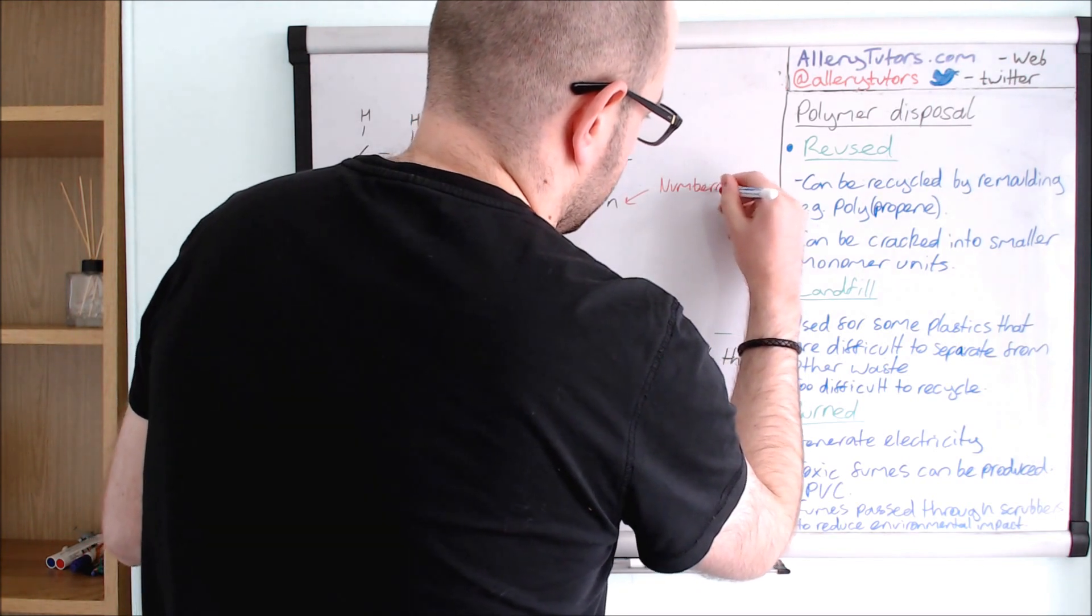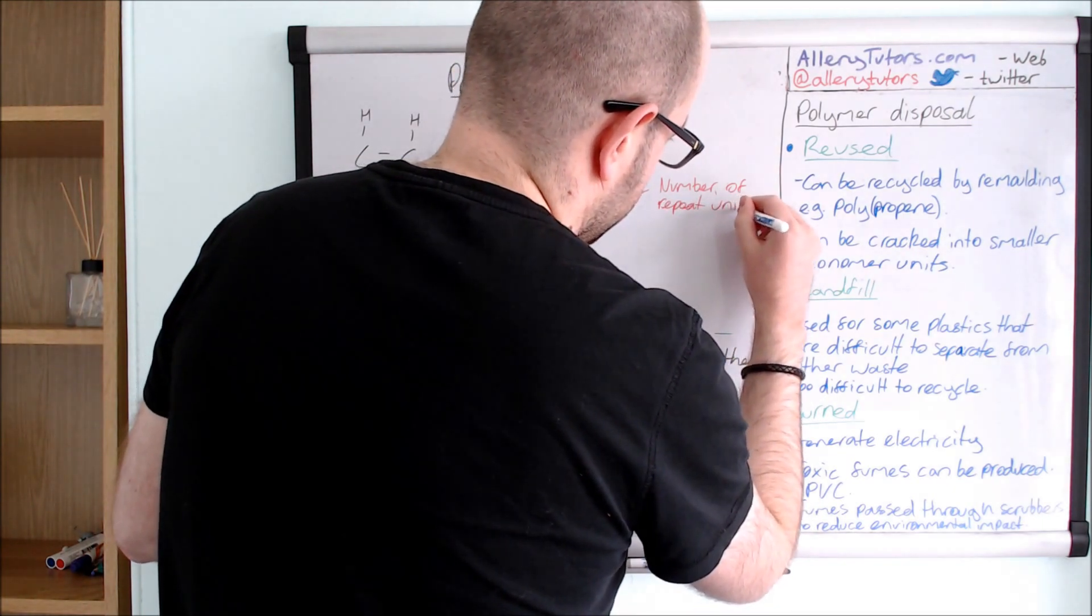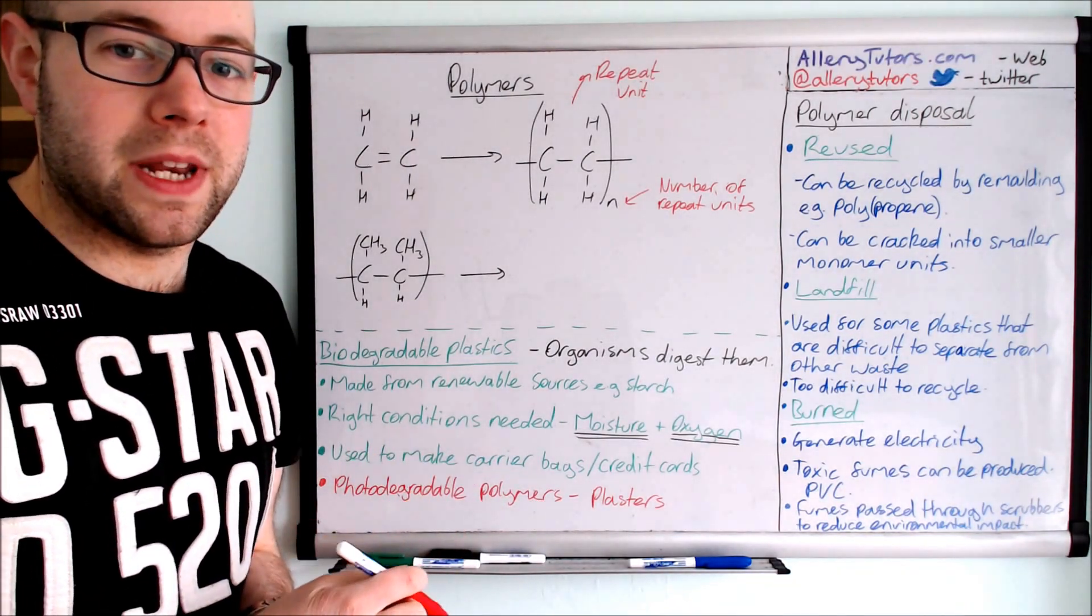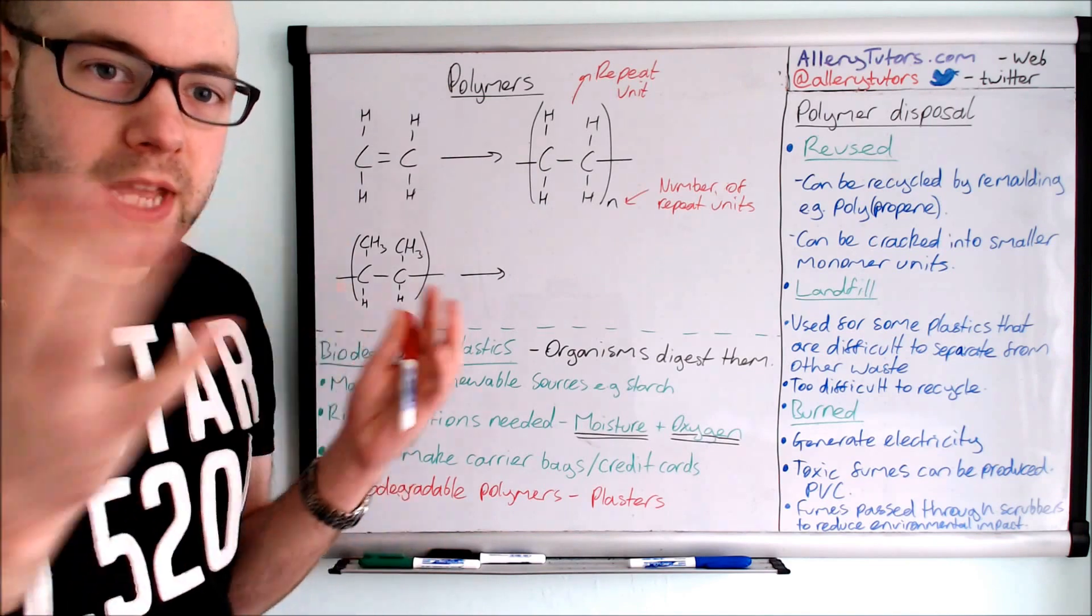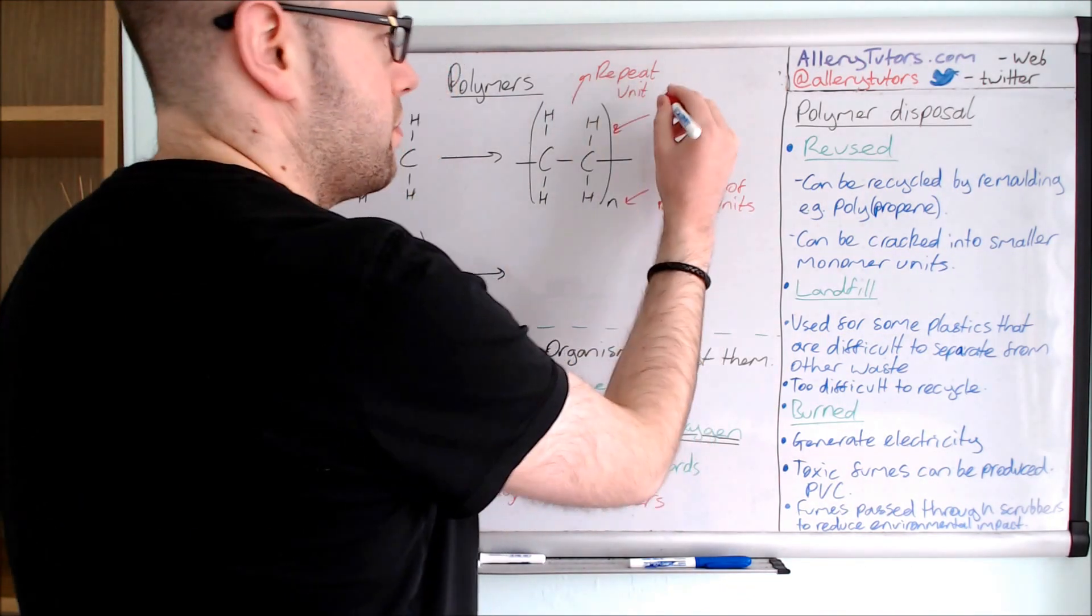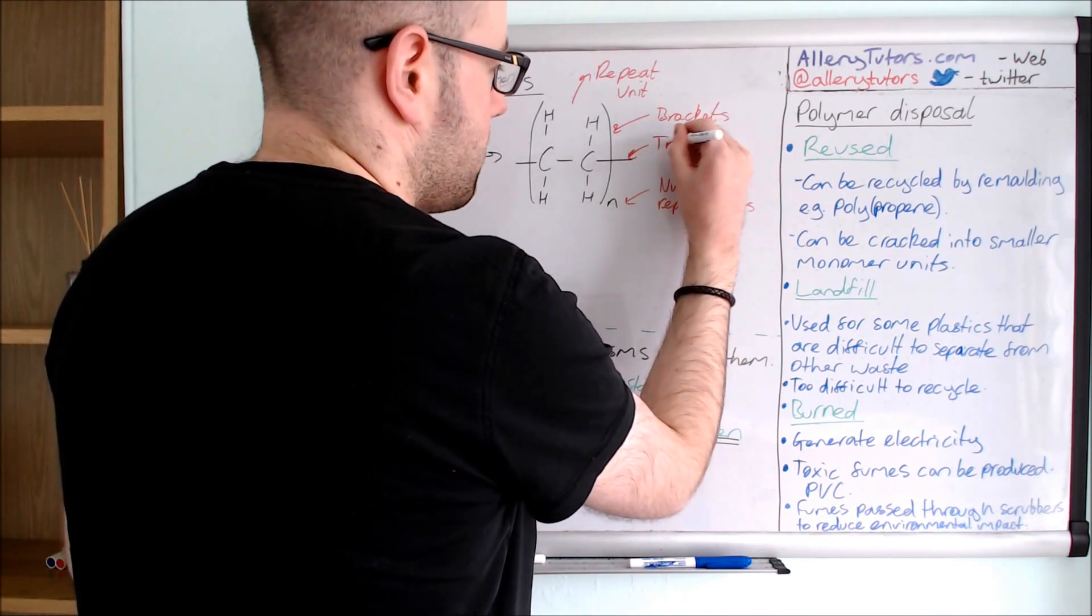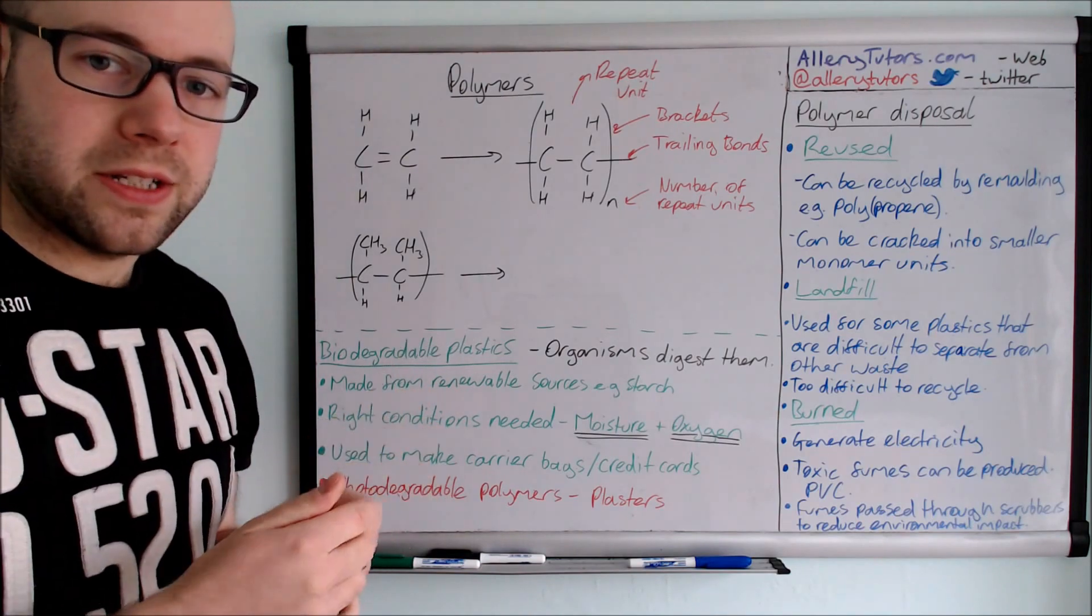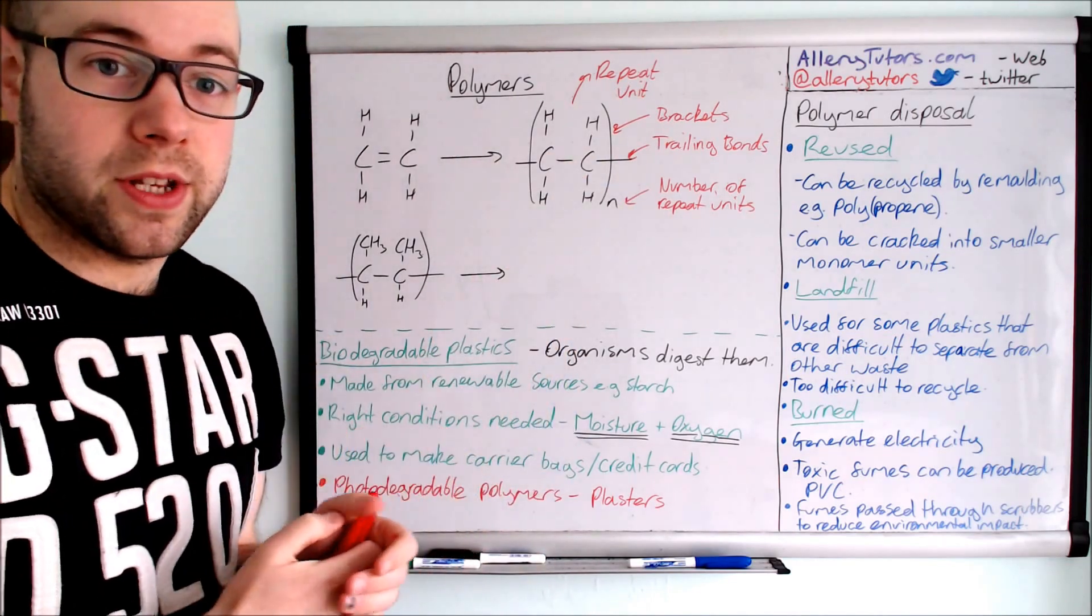This is the number of repeat units. And this is normally represented by N because we've got so many of these joined together it's not really feasible to put a number next to that. You can also notice some other things as well, that now the double bond is officially gone because that's been opened up to form the polymer. But also we have brackets. Make sure you include brackets to show and segregate the repeat units. And also you see that we've got these which are called trailing bonds. You must include these as well. The trailing bonds basically show that actually this repeat unit here is joined by other repeat units left and right to it to form the polymer chain. So it's really important that you draw this correctly as well.